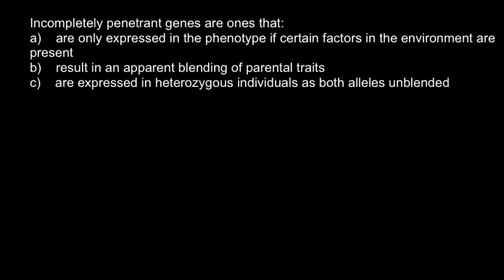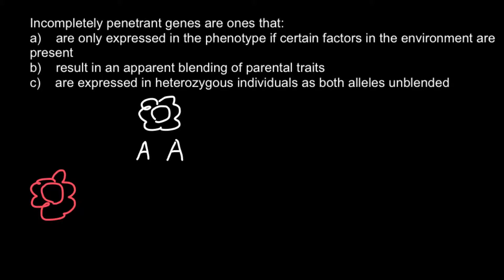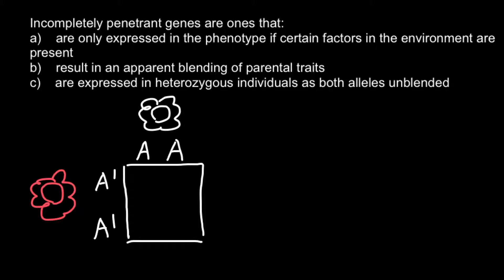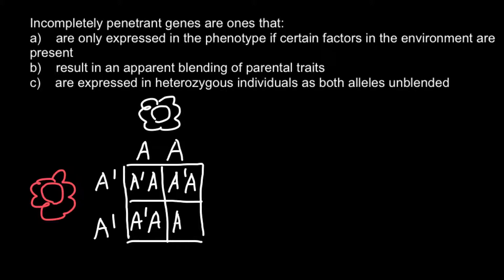Answer C is a classical example of co-dominance. Imagine we need to cross two plants: one with white flowers and genotype capital A capital A, and another plant with red flowers and genotype capital A-prime capital A-prime. When we build the Punnett square, all the progeny would be capital A-prime and capital A in every cell.